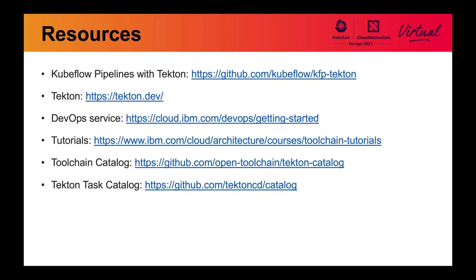One possibility we'll explore from these challenges is that maybe in the future, when Tekton gets more mature, we could design a DSL specific for the Tekton platform rather than relying on the DSL from Kubeflow pipeline, which has dependencies on running on Kubeflow pipelines. With this, we're going to end the session. Here are the resources for the project we have built — the GitHub link for Kubeflow pipeline with Tekton, the Tekton project, and the DevOps services we have used. You can also see some of the toolchain catalog and Tekton task catalog we used for our DevOps services. Thank you very much.